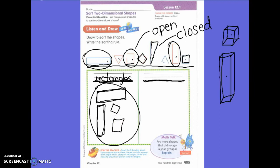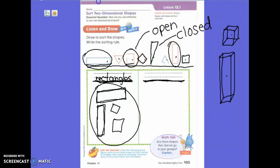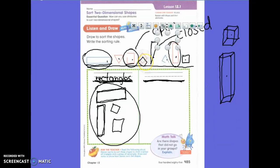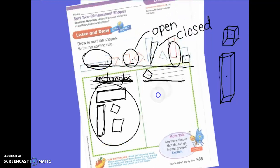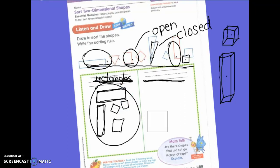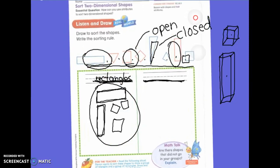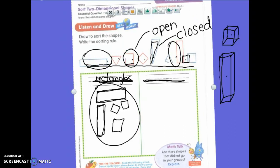Also, first grade, remember how we talked yesterday? Just because my square is rotated, does that mean it is not a square? It's still a square. It's just rotated. So we need to be careful with that as well. Let's move on to the next one.